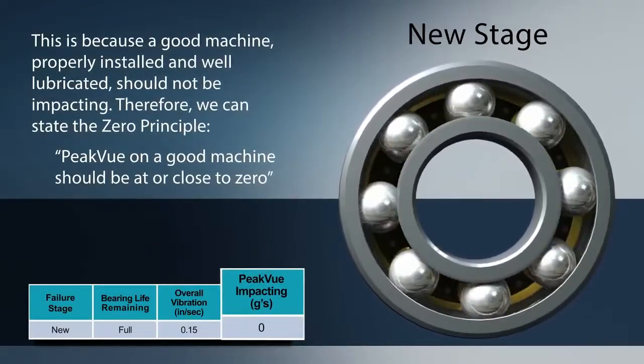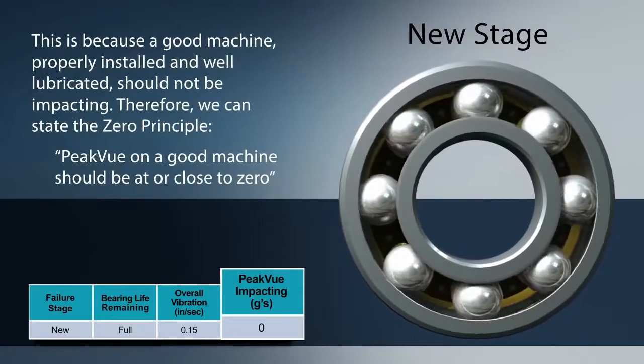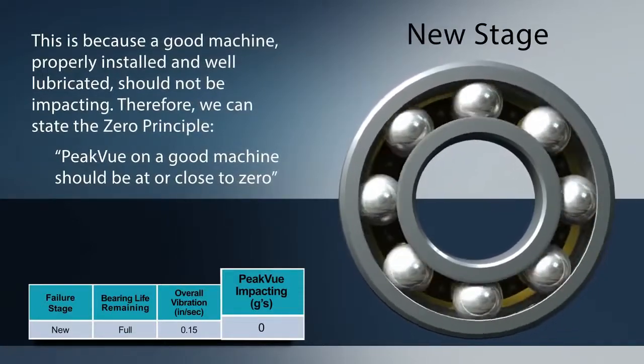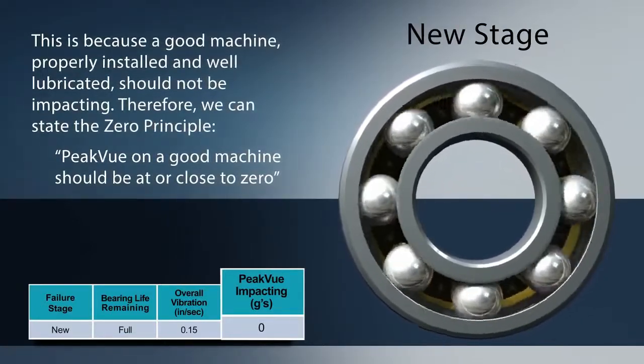Therefore, we can state the zero principle: peak view on a good machine should be at or close to zero.